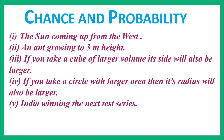Consider these statements: the sun coming up from the west; an ant growing to 3 meters in height. Looking at these statements, you would say that the sun coming up from the west — this is impossible. An ant growing to 3 meters in height — this is also impossible.